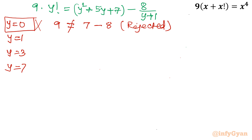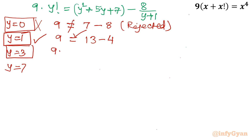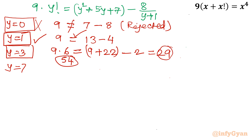For y equal to 1: left hand side is 9 times 1 factorial equals 9. Right hand side is 1 plus 5 plus 7 minus 8 over 2, which is 13 minus 4 equals 9. This is true, so y equal to 1 is accepted. For y equal to 3: left hand side is 9 times 3 factorial equals 9 times 6 equals 54. Right hand side is 9 plus 15 plus 7 minus 8 over 4, which is 31 minus 2 equals 29. Since 54 does not equal 29, y equal to 3 is rejected.